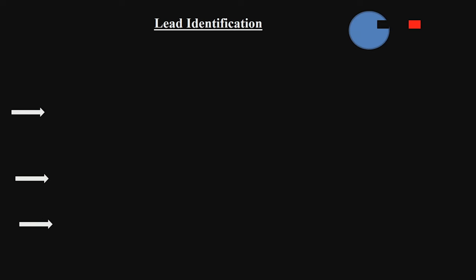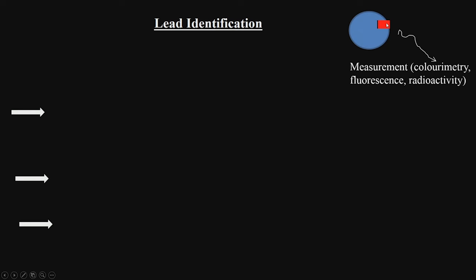Once you have the target, you need to design the lead. For example, if a molecule goes and binds to a protein or enzyme, there could be changes in color, fluorescence, or radioactivity that you could measure. That is a measure of the activity of the lead with respect to the control. You can screen a large number of leads and make measurements accordingly.